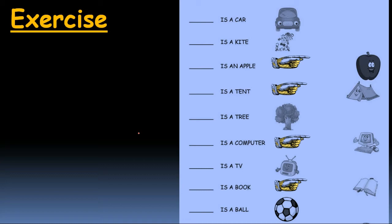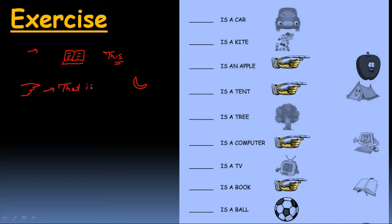चलिए exercise करते हैं, लेकिन exercise करने से पहले कुछ और examples दूँगी। For example, हमारे पास एक book है — हमारे पास बिल्कुल नज़दीक है — तो हम क्या use करेंगे? 'This is a book'। For example, हमसे दूर — चाँद के बारे में बता रहे हैं — तो finger करके बताना 'that is a moon'। हम किसी chair पर बैठे हैं तो 'this is a chair'।